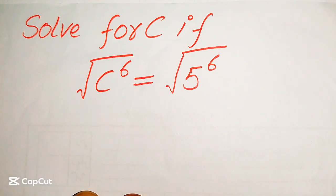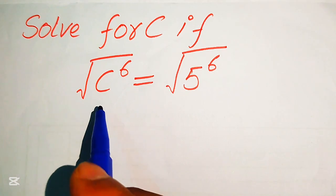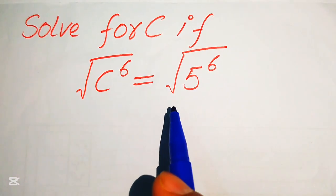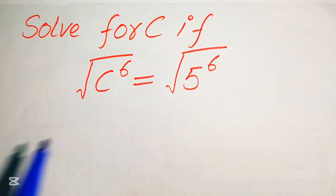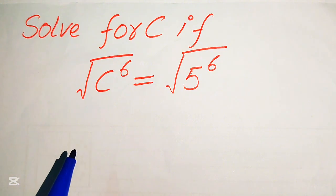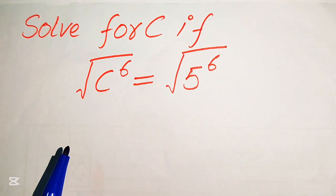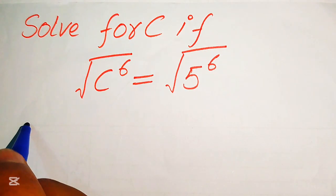Hello everyone. Today I want to show you how to solve this problem: find the values of c if we have the k-th root of c to the power of 6 equals the k-th root of 5 to the power of 6. We solve this problem for the values of c. If you have any other method in mind, please don't hesitate to write it in the comment section.